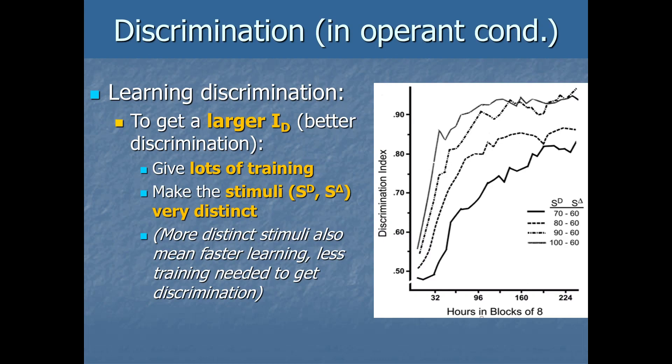Well, one of the biggest things you can do to improve discrimination and learn it faster is to use stimuli that are very distinct. So instead of using a dark red button and a light red button, you might use a red button and a blue button. They're very distinct, right? So look at the graph over here on the right. Each line is a different condition that was tested. This is real data. So let's look at them separately. Let's just look at the bottom line here.